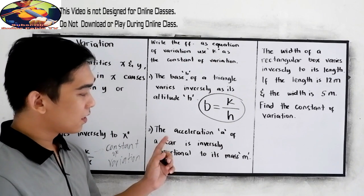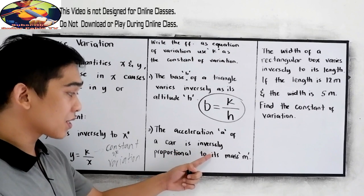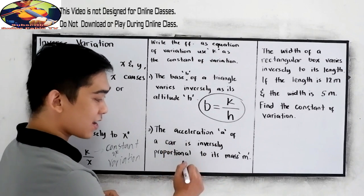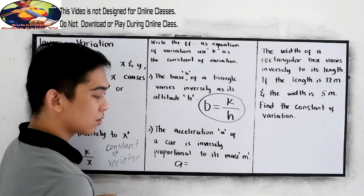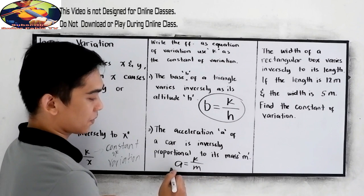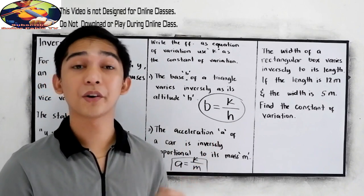Number two, the acceleration A of a car is inversely proportional to its mass. So A is equal to K over mass, which is M. That's how we write the equation of our variation.